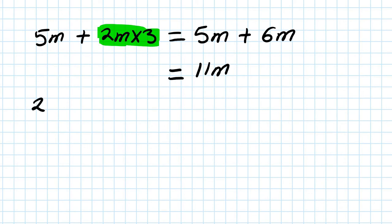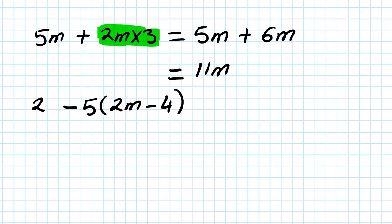Next one — let's say 2 minus 5, open bracket, 2m minus 4. You know that step number 1, I need to remove the bracket first. So to remove the bracket, you go minus 5 times 2m, and then minus 5 times minus 4.